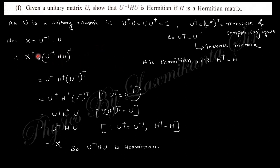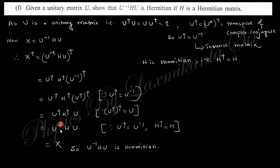Taking the dagger of both sides of X = U†HU: X† = (U†HU)† = U†H†(U†)†. Using (U†)† = U and H† = H, and substituting U† = U⁻¹, we get X† = U†HU = X. Since X† = X, this confirms that X is Hermitian.